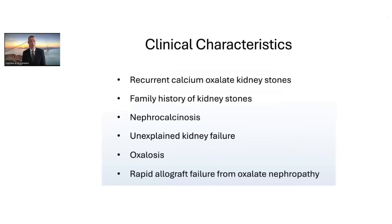Other clinical clues include unexplained kidney failure where the only known risk is kidney stones, without diabetes or hypertension — two much more common causes of CKD. Perhaps the patient has oxalosis, or has received a kidney transplant with rapid allograft failure from biopsy-proven oxalate nephropathy. These are all potential clues pointing toward primary hyperoxaluria.